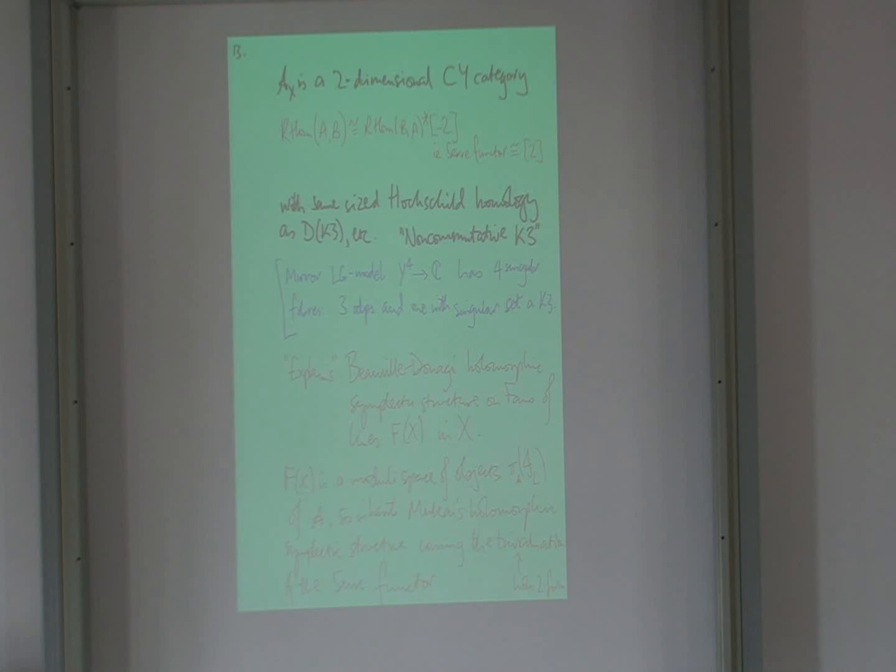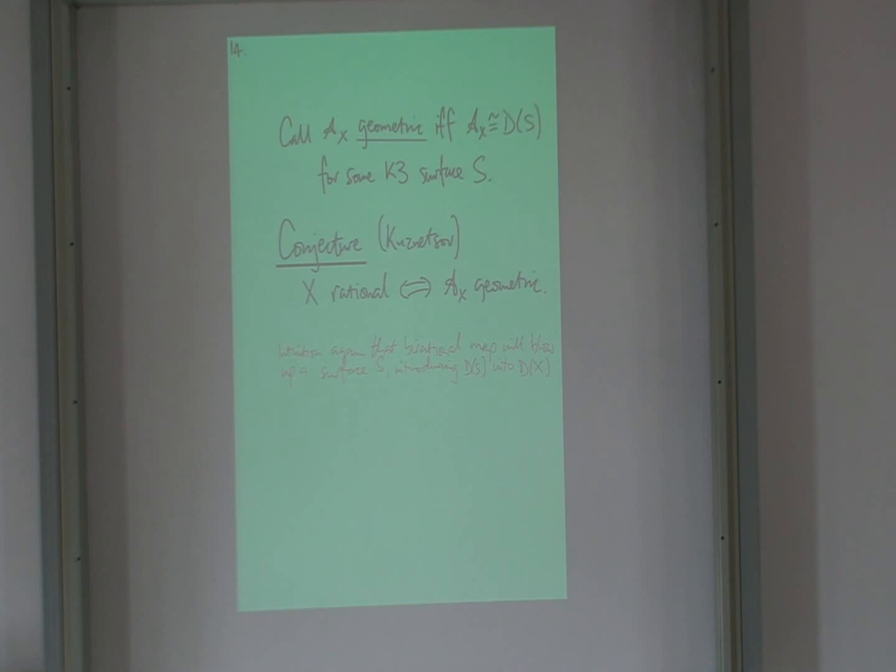In other words, I want a choice of two points. So in other words, the trivialization of the canonical. And we call AX geometric if and only if it really is the derived category of a genuine K3 surface. And because of all these examples, and we'll decide that X is rational if and only if AX is geometric. And again, the idea is at some point, this rational map can involve a K3 surface and introduce the derived category of K3 into the derived category of the cubic.